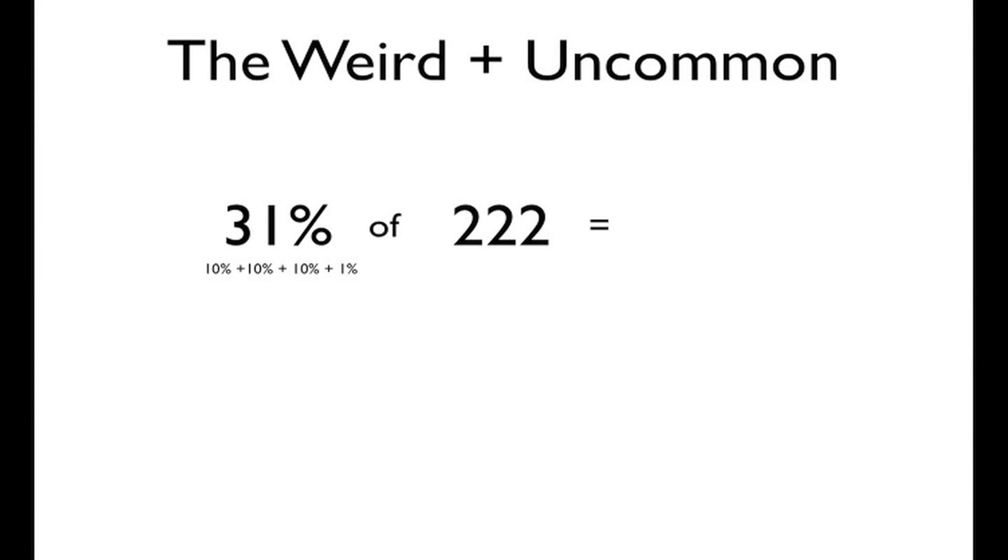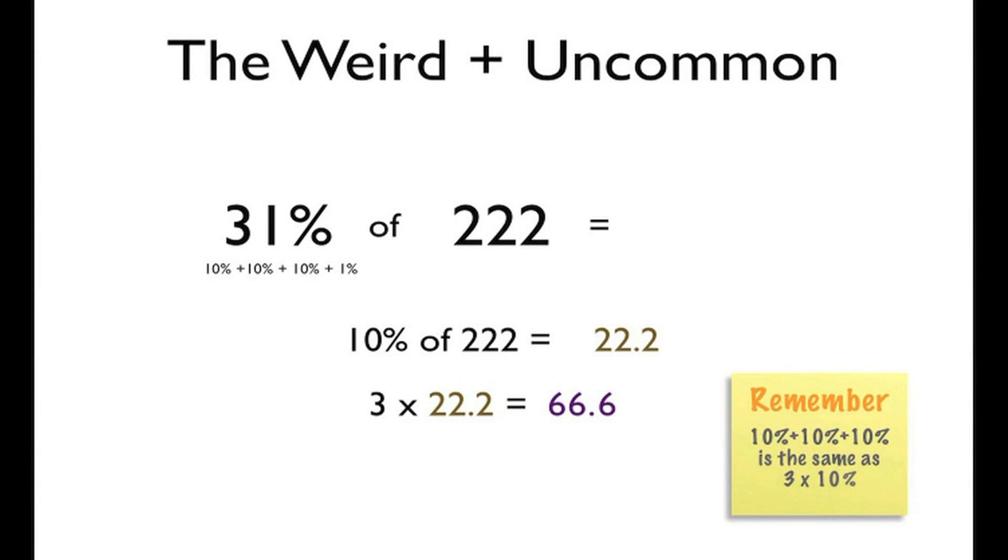Breaking up 31%, we get 10% three times and 1%. Now, 10% of 222 just gives us 22.2. Because we have three sets of 10%, we need to multiply that by 3 to give us 66.6. Remember, 10% plus 10% plus 10% is going to be the same as 3 times 10%. No point adding it all up.